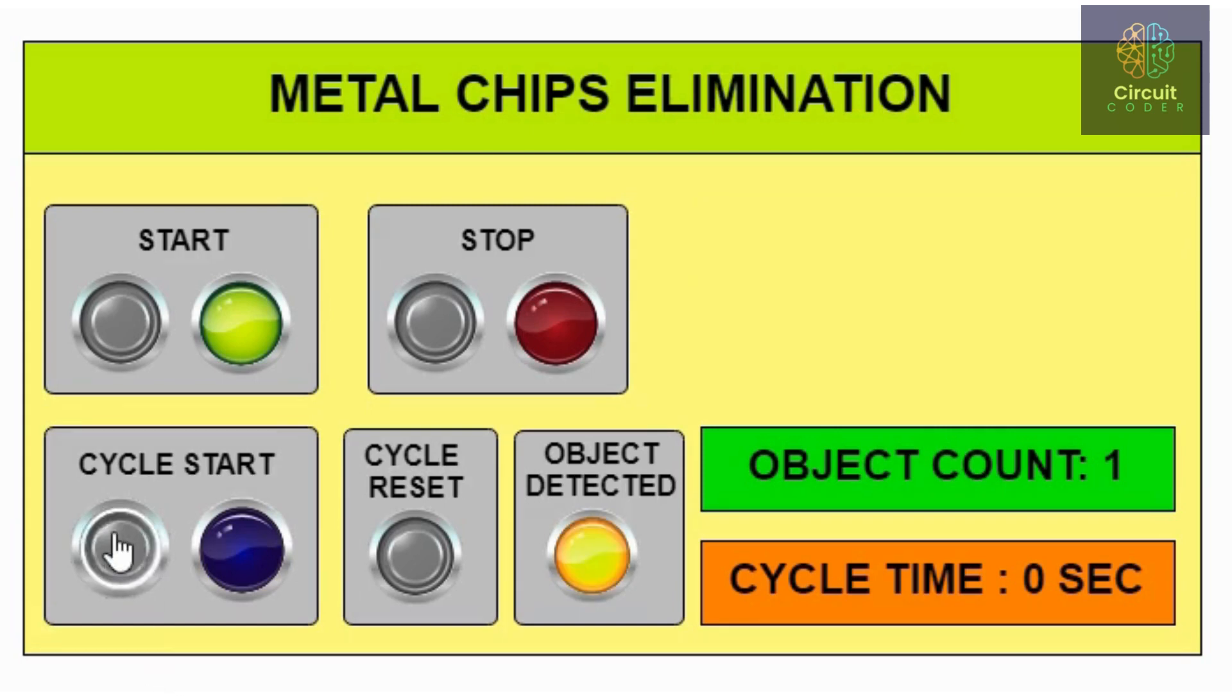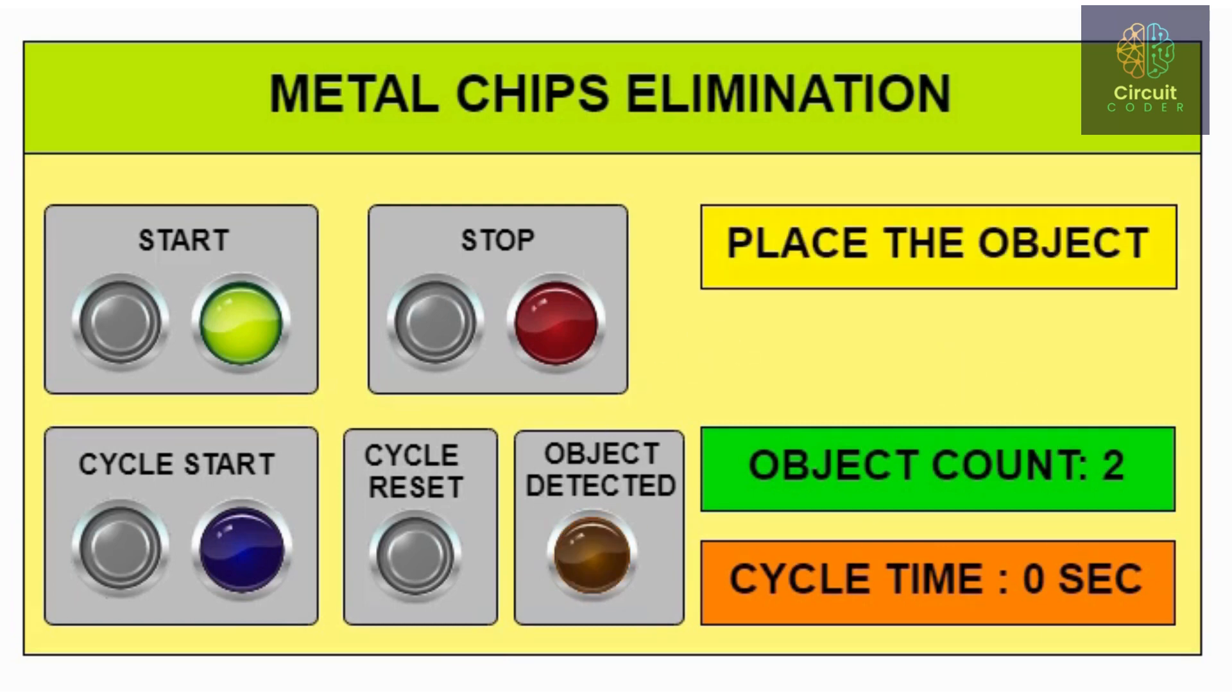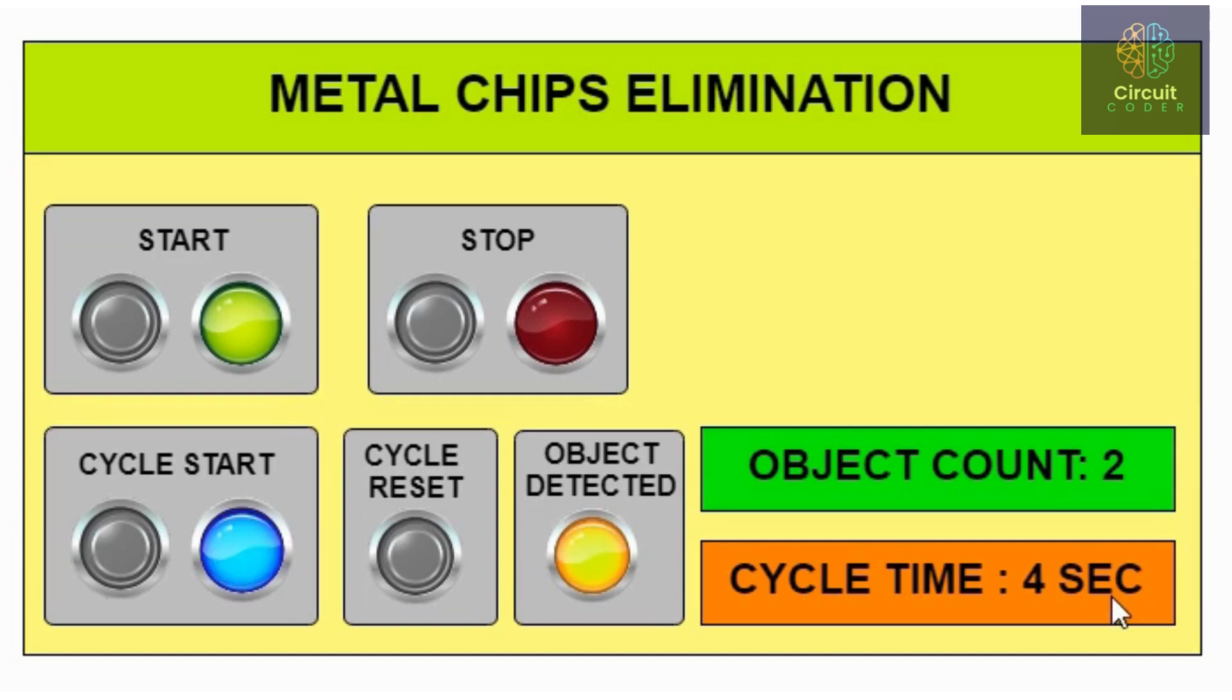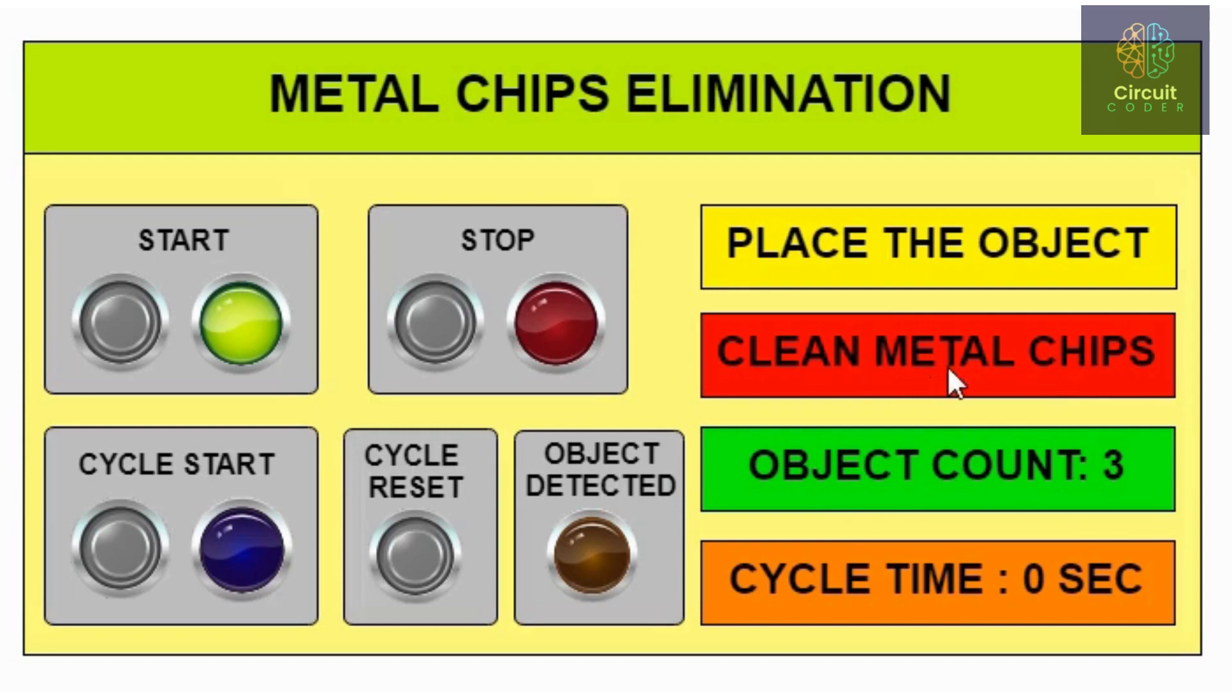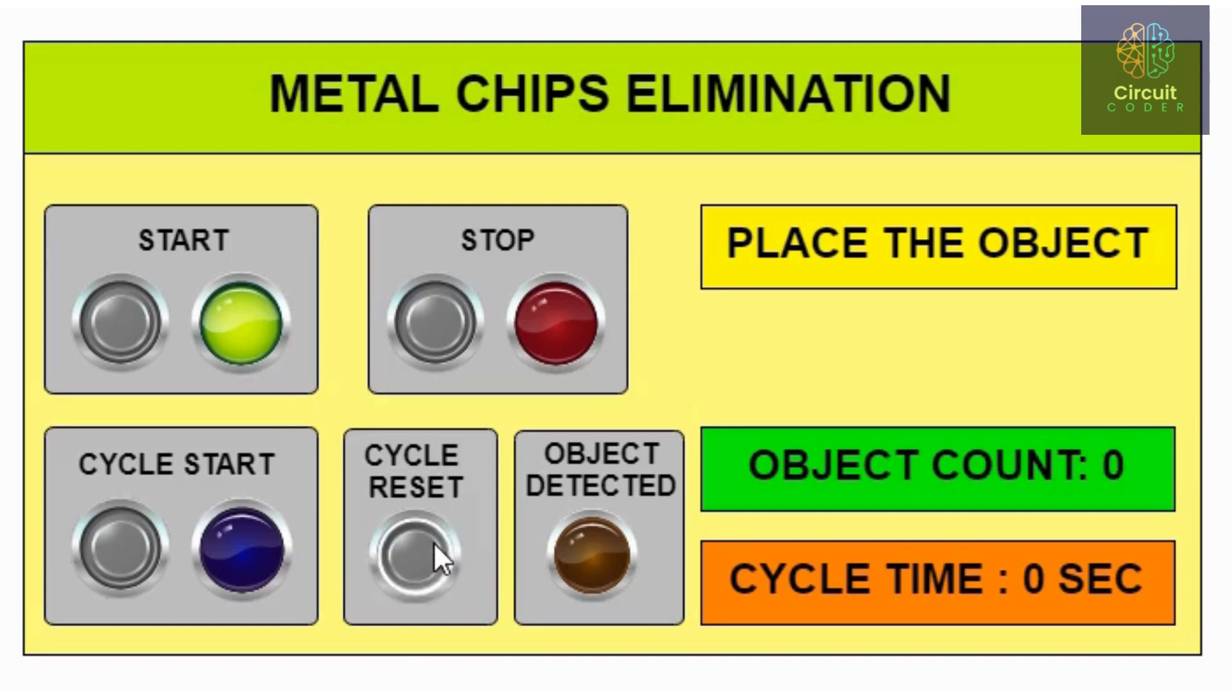The same cycle sequence is then repeated. Now once when the object count reaches count of 3, the operator will get the command to clean metal chips. The cycle will be locked. After all metal chips have been removed, the operator will then have to press cycle reset button to restore back the sequence.